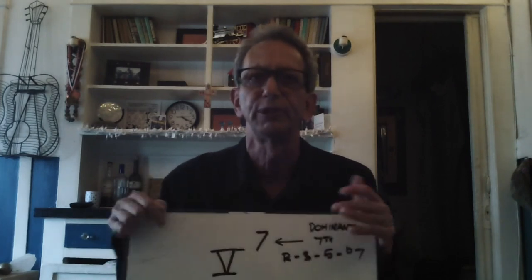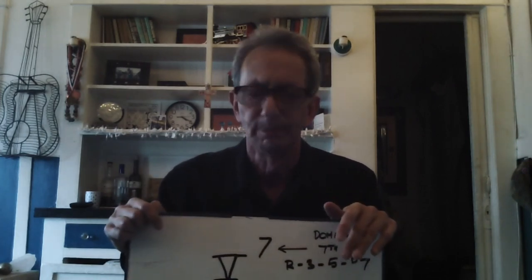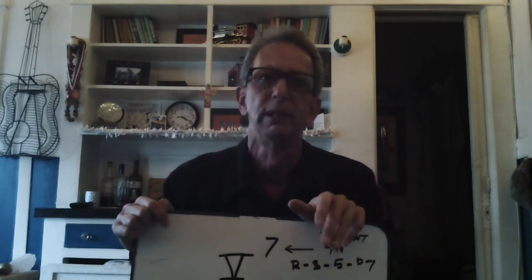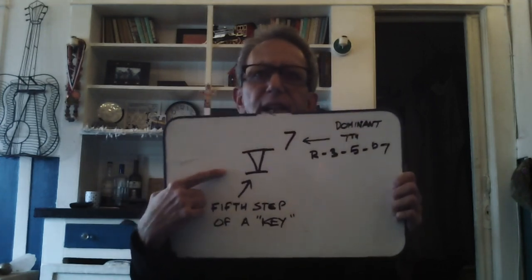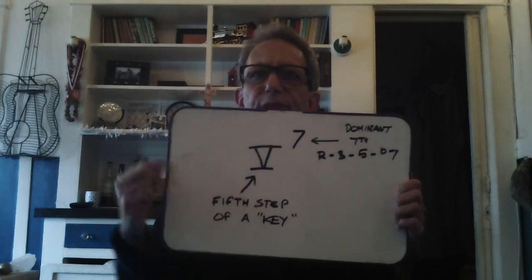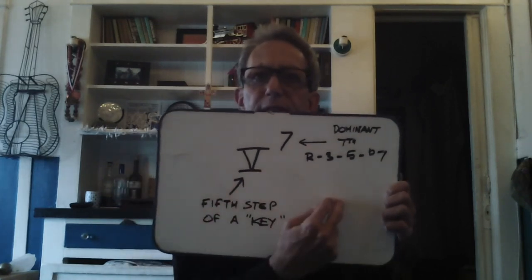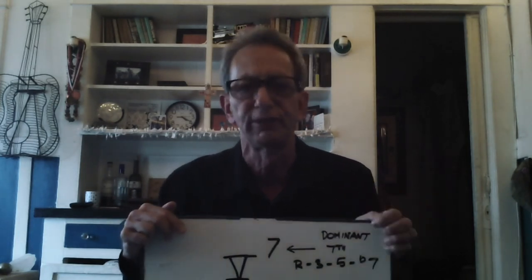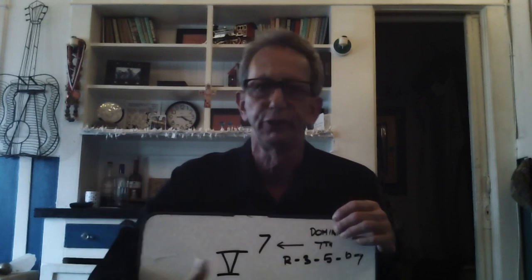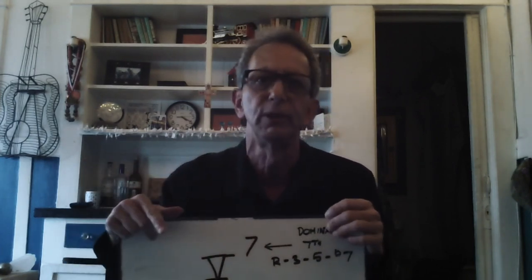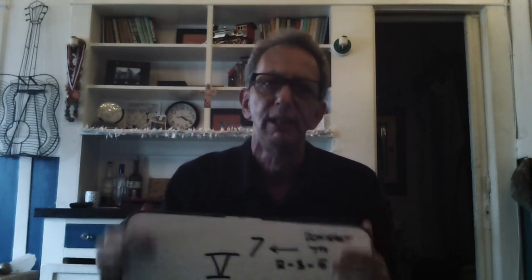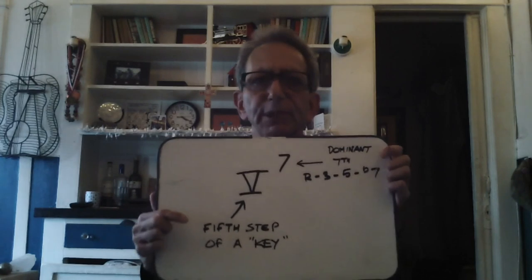My preference is to call it a dominant seventh chord or a dominant chord, so we know for sure what type of chord we're dealing with. Even the V can be a little tricky in the explanation, because the assumption is it's going to a target. The fifth step of the key of C is G7, the target chord is C itself — G7 resolves to C, so G7 is five steps from its target C. That's the implication of a V7.